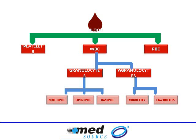When we say more information, we basically mean more information about WBCs. WBCs are of two types: granulocytes and agranulocytes. Granulocytes, when looked under the microscope, have granules in them — and therefore they are called granulocytes — while agranulocytes do not have any granules. Granulocytes are further classified as neutrophils, eosinophils, and basophils, and agranulocytes are further classified as monocytes and lymphocytes.